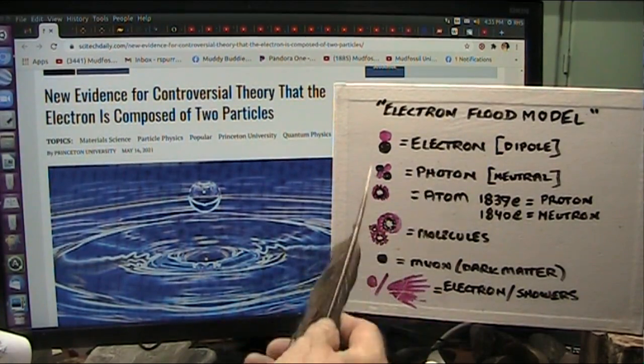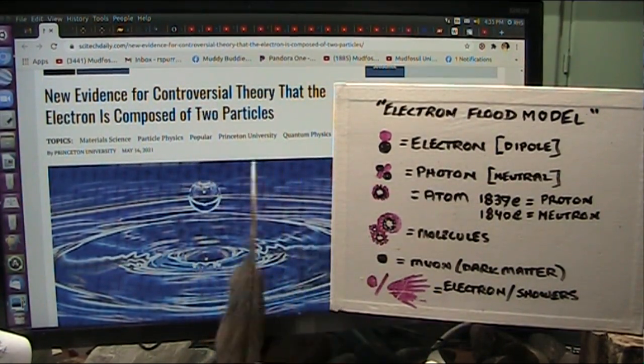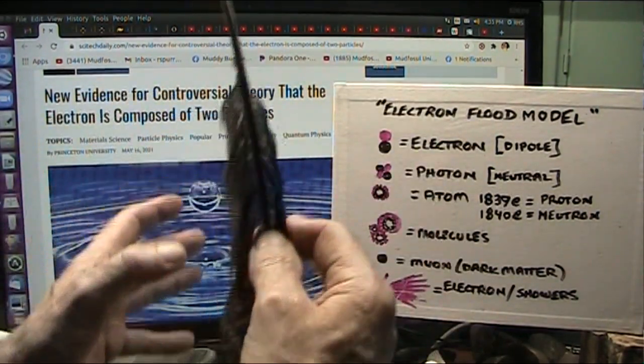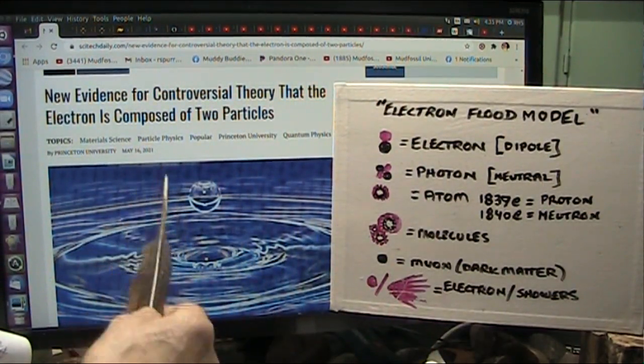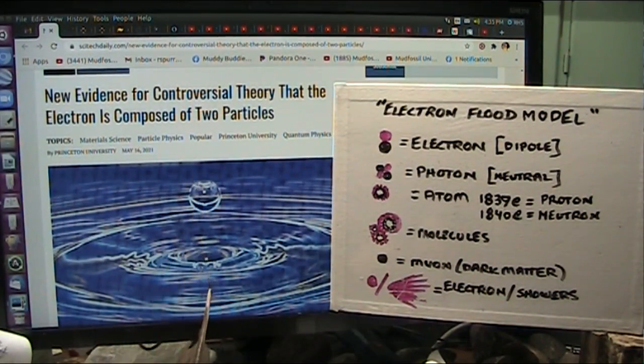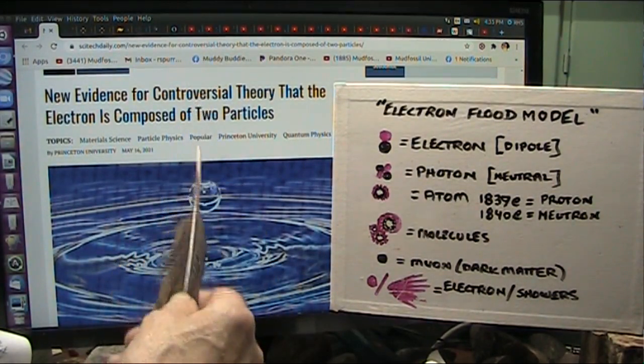I've shown this for quite some time now. Quantum physics and all that stuff, they really take their time to make any decision. And it appears Princeton is coming out on a limb and saying it looks like we have two particles in the electron.